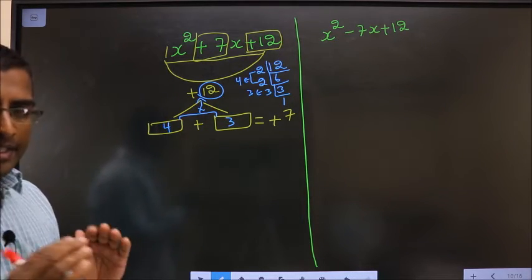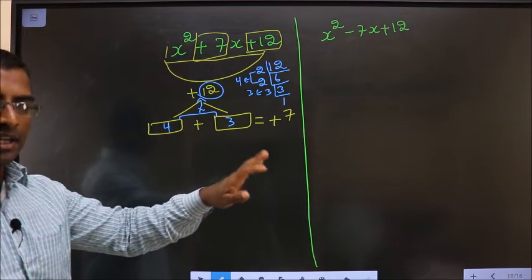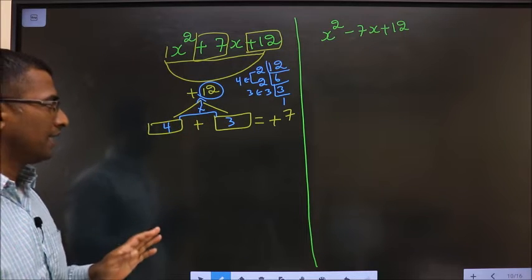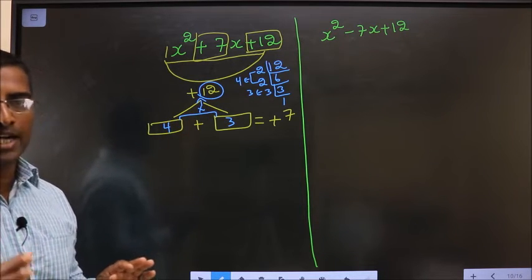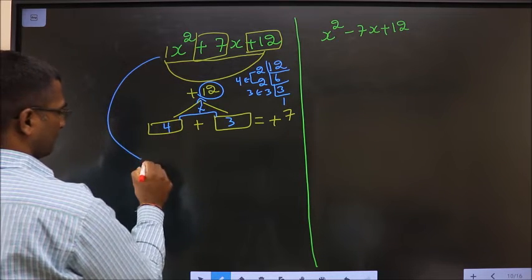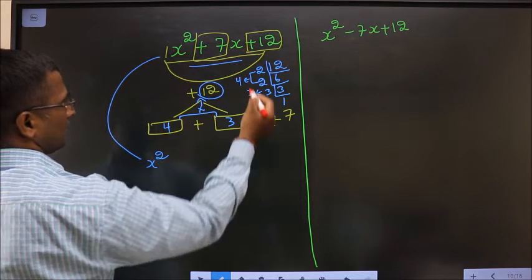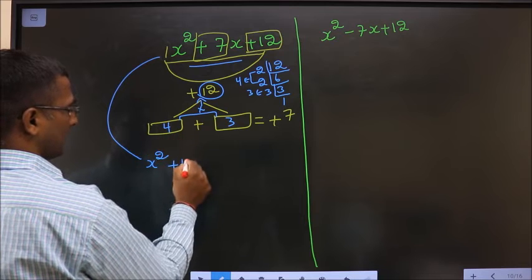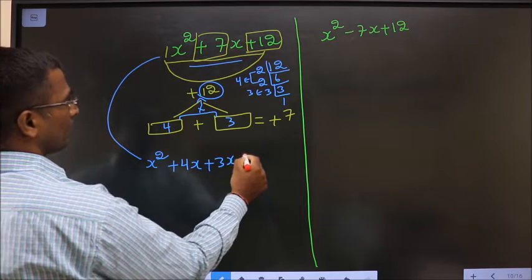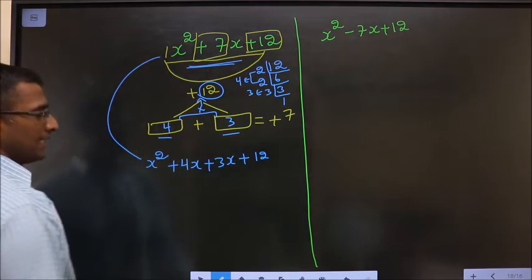Now adjust the signs. Plus 4 plus 3 is plus 7 — accepted. Plus 4 into plus 3 is plus 12. So signs are also adjusted. Now in place of plus 7x, we will write 4x plus 3x plus 12. Instead of 7x we will write 4x plus 3x.